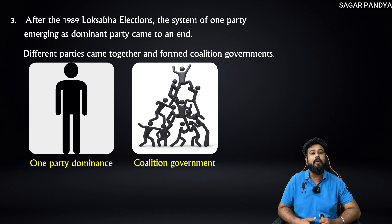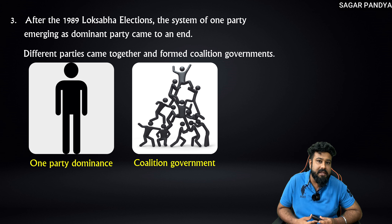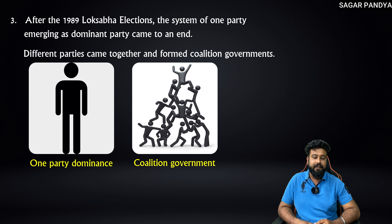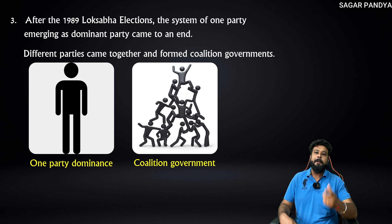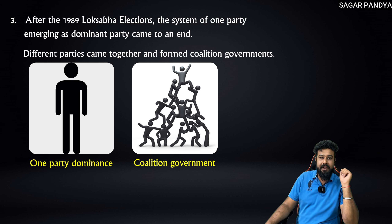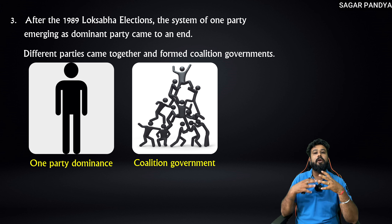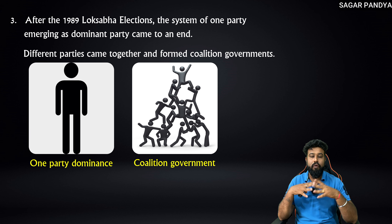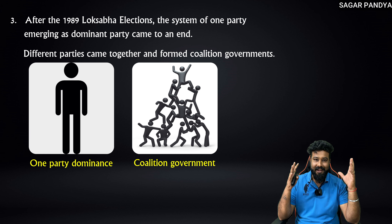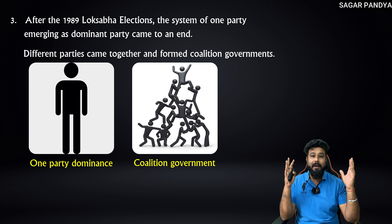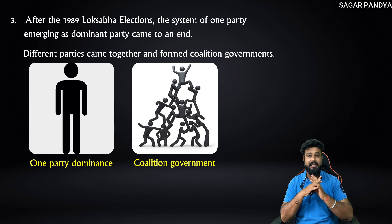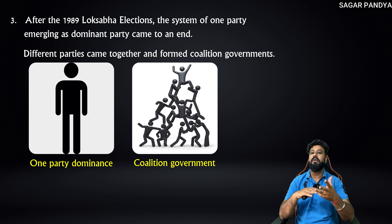A coalition government means when two or more parties come together to form a government — a milli-juli sarkar, meaning a mixed government. For example, if farmers in Ratnagiri have demands, the minister sitting in Delhi would not easily know about them, so people in different parts of India realized their demands were not being met, and they started voting for people who would think about their area's development.